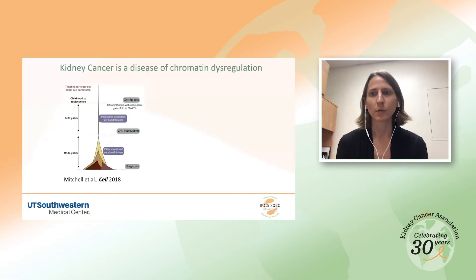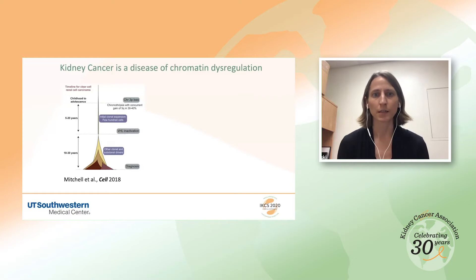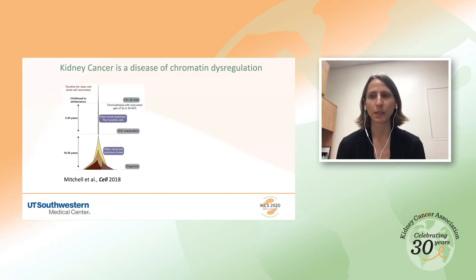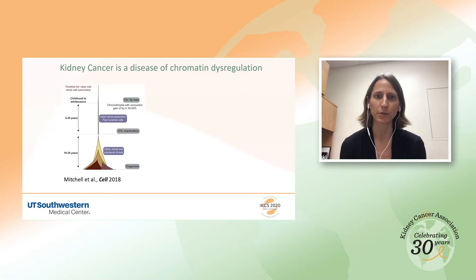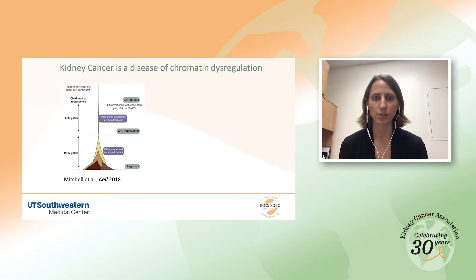As you're all aware, kidney cancer is a progressive disease. The first hit is typically a loss of heterozygosity of chromosome 3P. This loss of heterozygosity leaves a patient susceptible to additional mutations in tumor suppressors that lie within this particular region of 3P. This eventually leads to kidney cancer initiation, progression, and diagnosis.